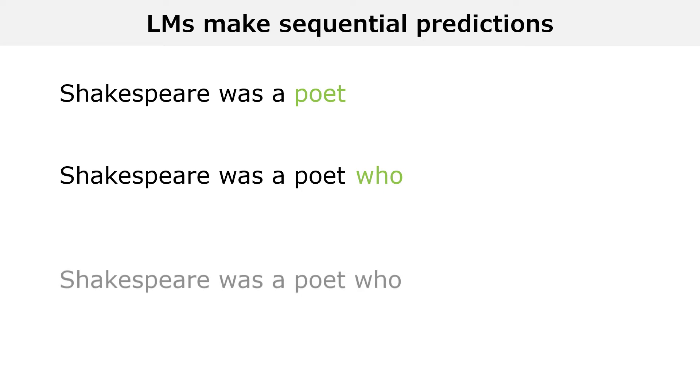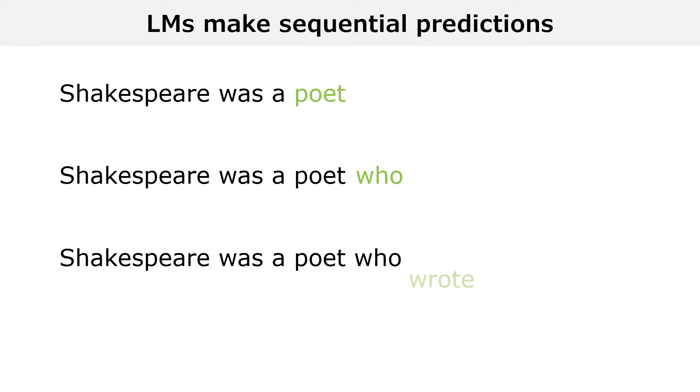We add the prediction to the text and we use the model to make a new prediction. We keep doing this until we have a complete sentence. In this example, after making 4 sequential predictions, we have generated a complete sentence: Shakespeare was a poet who wrote plays.